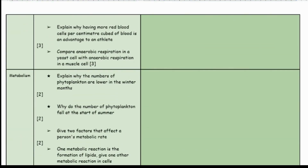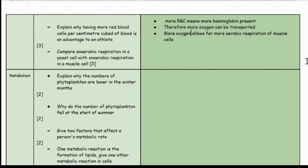Explain why having more red blood cells per centimetre cubed of blood is an advantage to an athlete. This is a triple science question. Having more red blood cells means there is more haemoglobin present. Because there is more haemoglobin, more oxyhaemoglobin can be transported. Therefore, more oxygen allows for more aerobic respiration, and because there is more respiration, more energy can be released in the muscle cells.